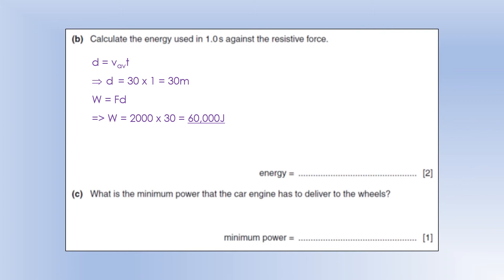You could have minus 60,000 here because it's working against the car, but the question is looking for the magnitude. What is the minimum power the car engine has to deliver to the wheels? We are delivering 60,000 joules every second to replace the work done against the resistive force, so our engine has to do 60,000 joules every second to keep travelling at steady speed — and joules per second is a watt, the unit of power.